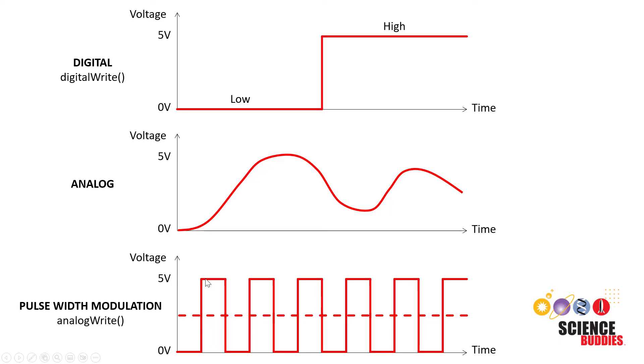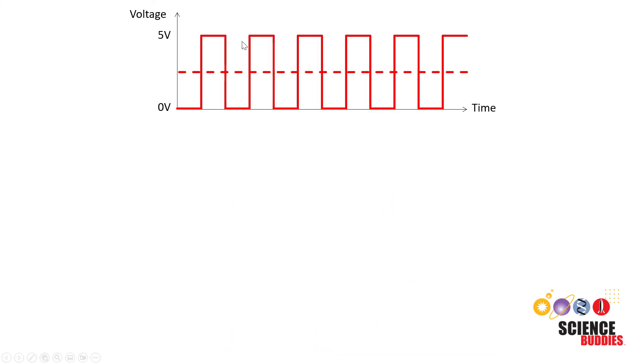Pulse width modulation or PWM is a method we use to kind of get around that limitation by very rapidly switching a digital pin on and off. For example, you can picture how if we very quickly switch the pin between zero volts and five volts, so it's off half the time and on half the time, that would give us an effective average voltage of two and a half volts. So even though we don't have a true analog output, if we switch the digital pin on and off fast enough, we can create an average voltage somewhere in between those two values. That is what the analog write command is actually doing. It is switching the pin on and off very quickly instead of generating a true analog voltage.